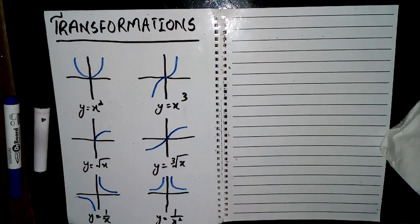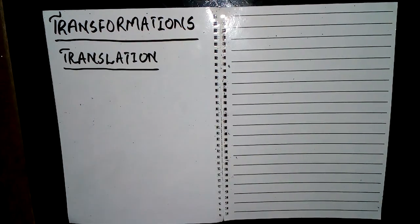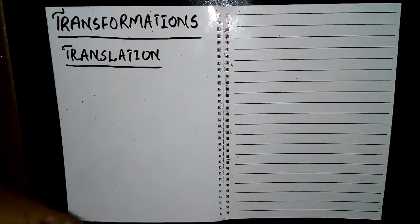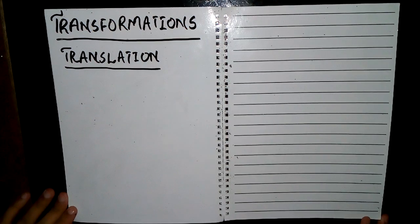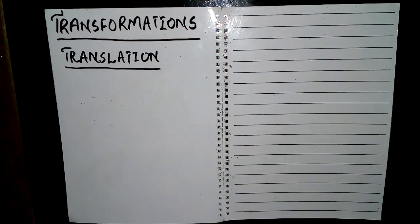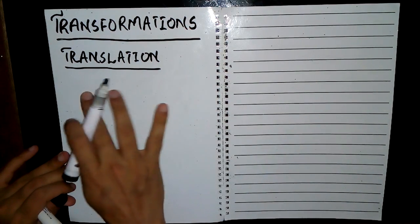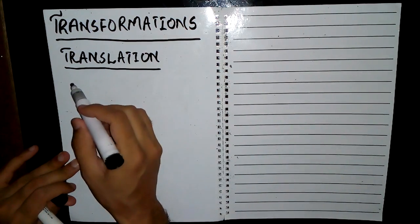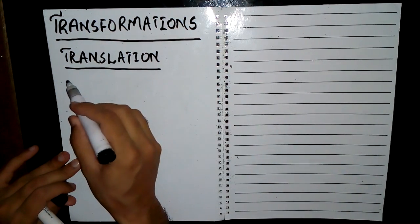In A-levels, we have three different kinds of transformations. First of all, translation — translation means that the graph is moving in the x-direction or in the y-direction. We have four types of translations.